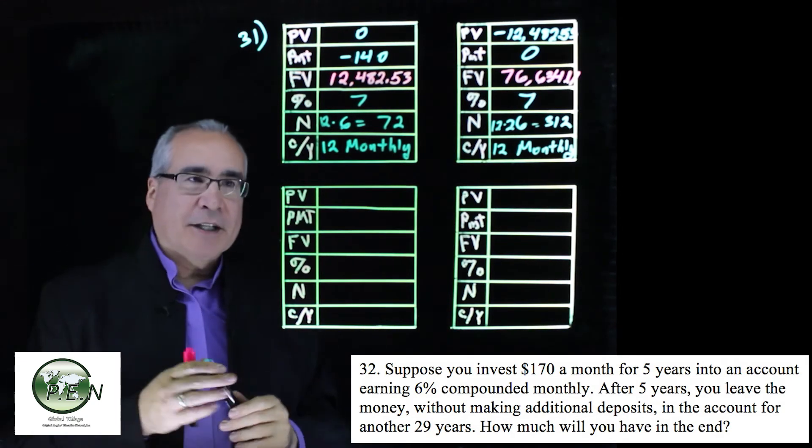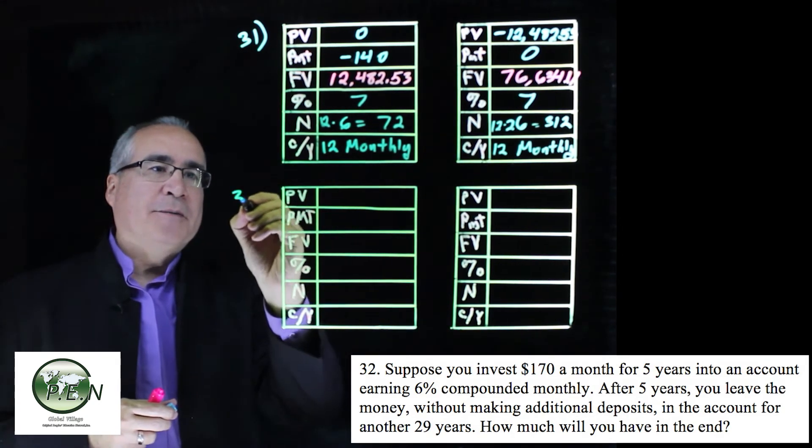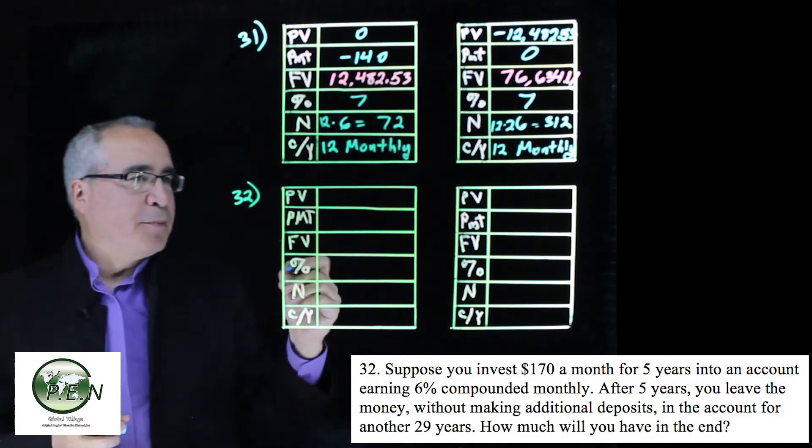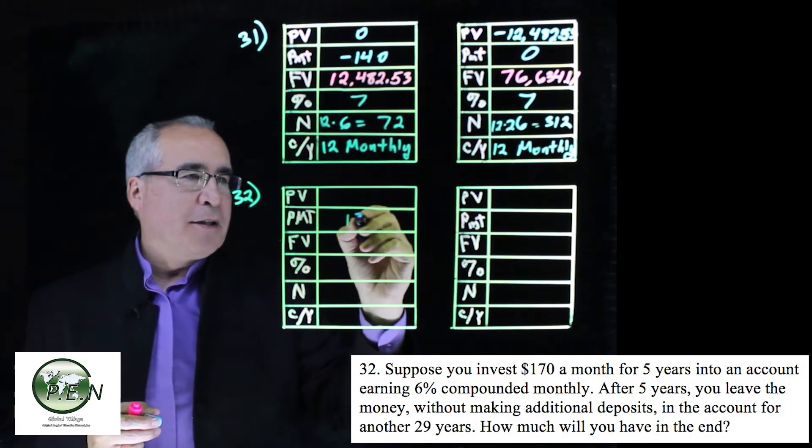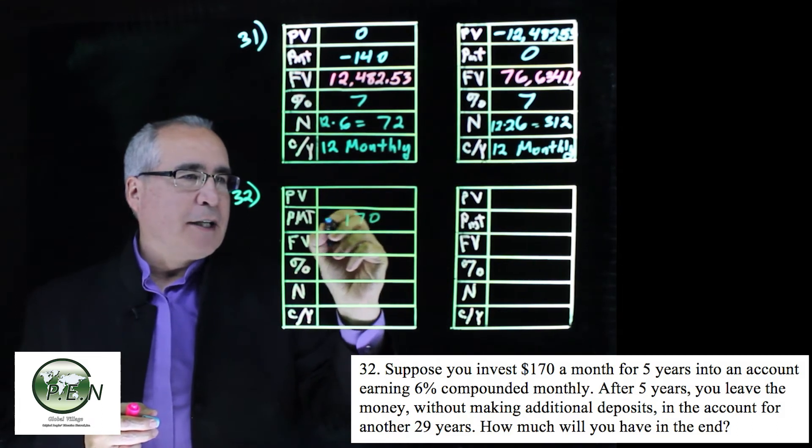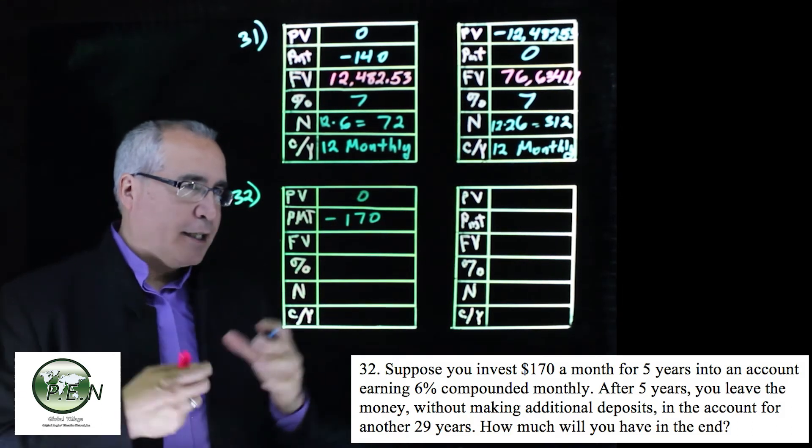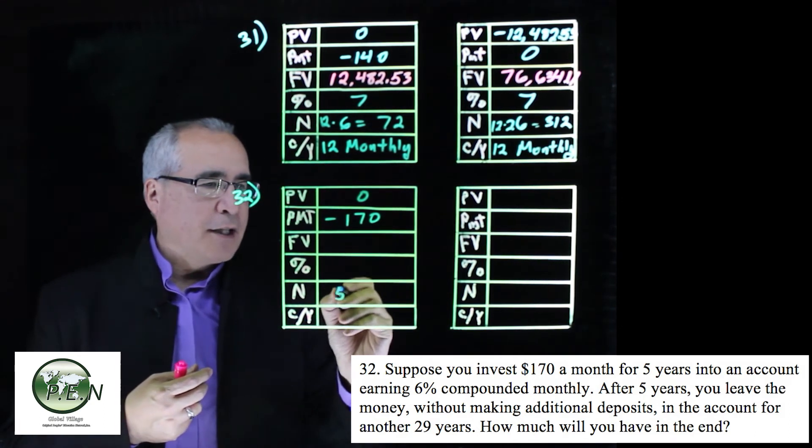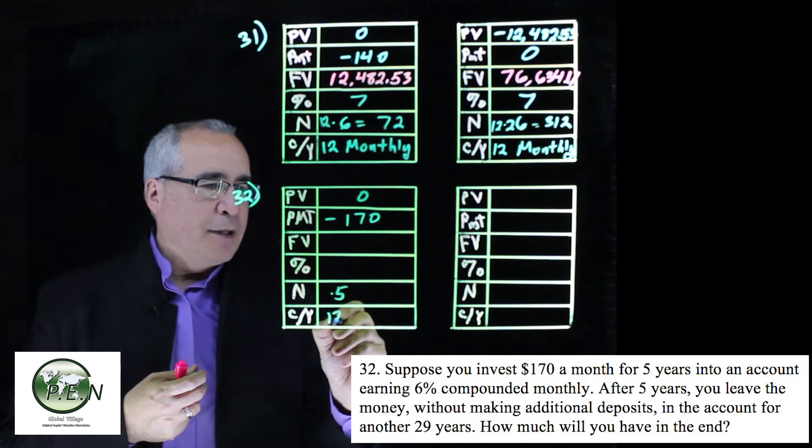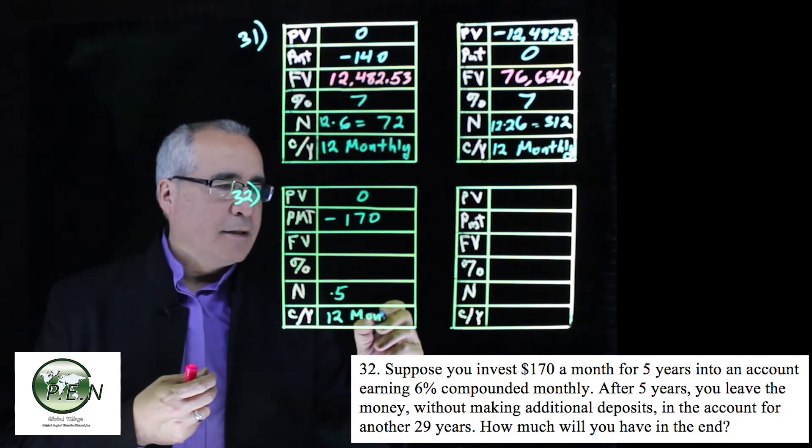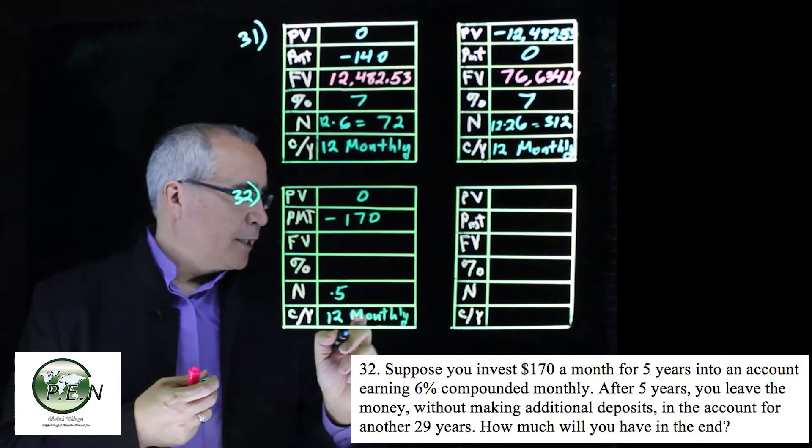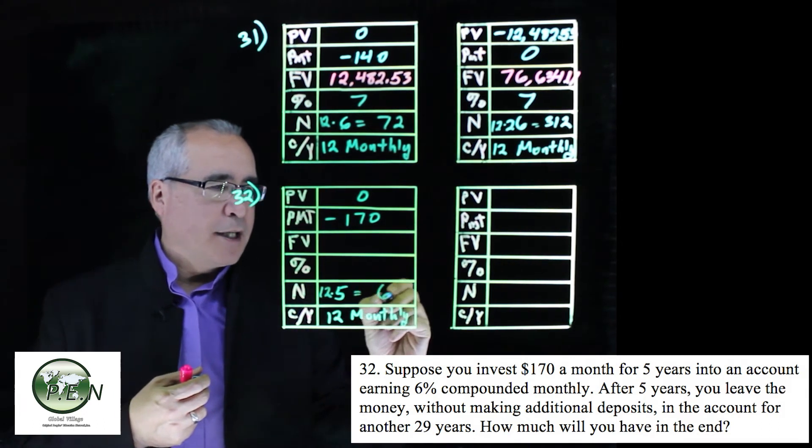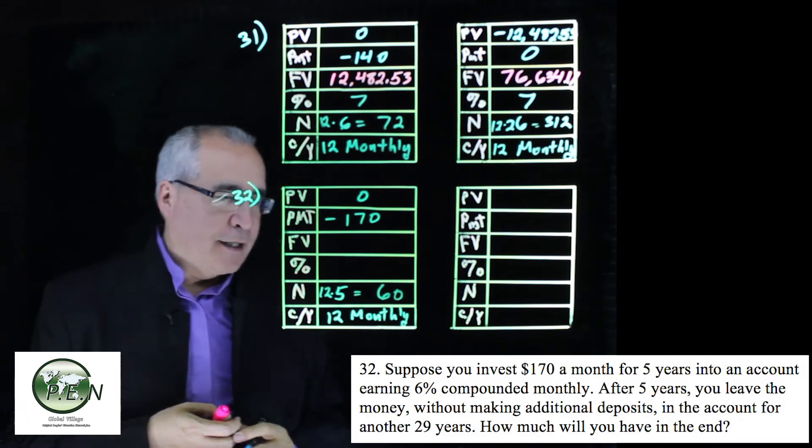Let's take a look at another example, 32. In 32, we're putting $170 a month, so that's our payment. No initial lump sum put in. We're going to do it for five years, so that goes there. We're doing it monthly.